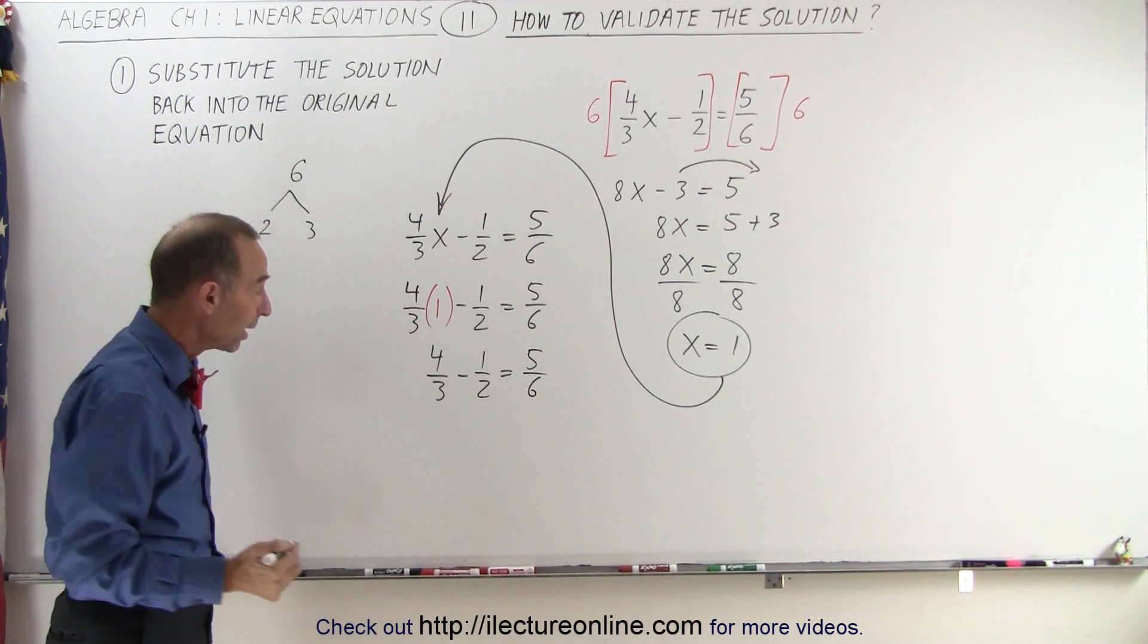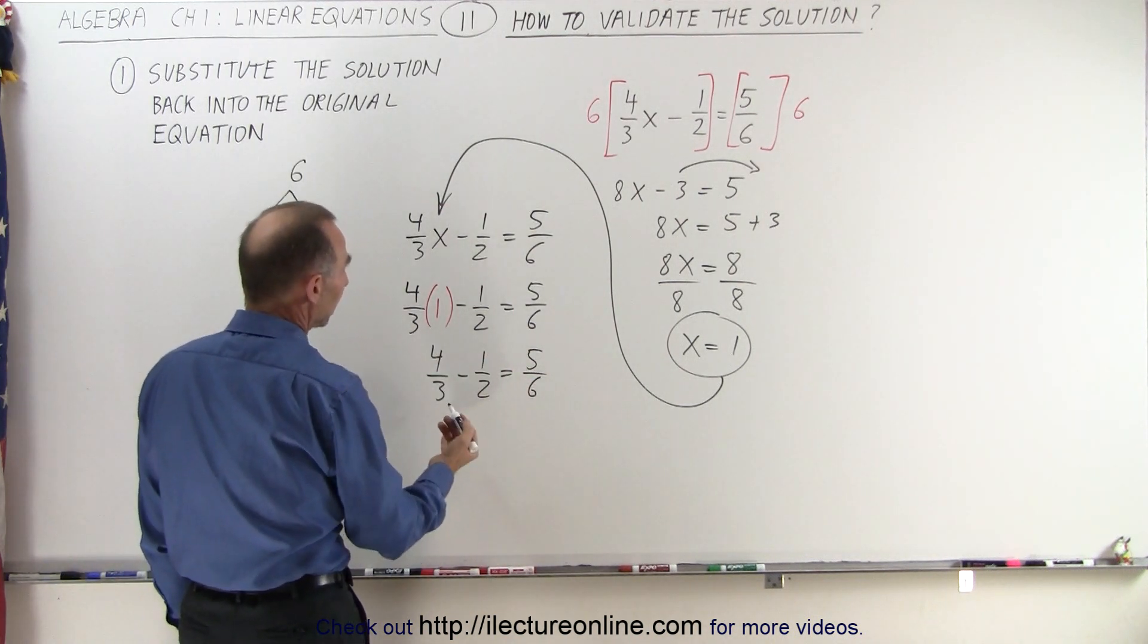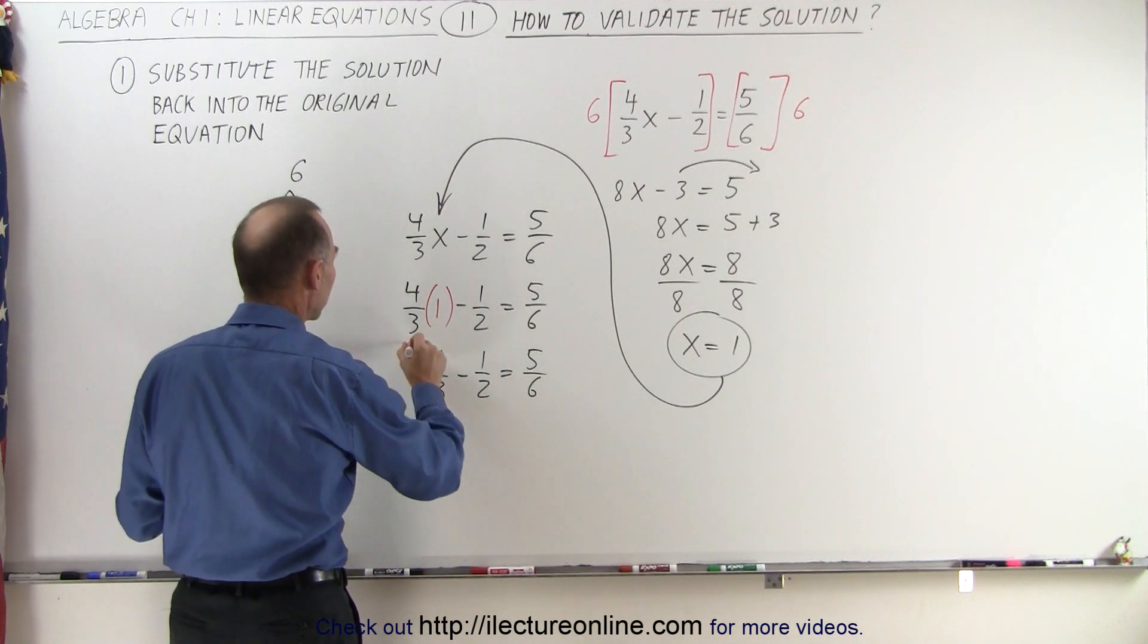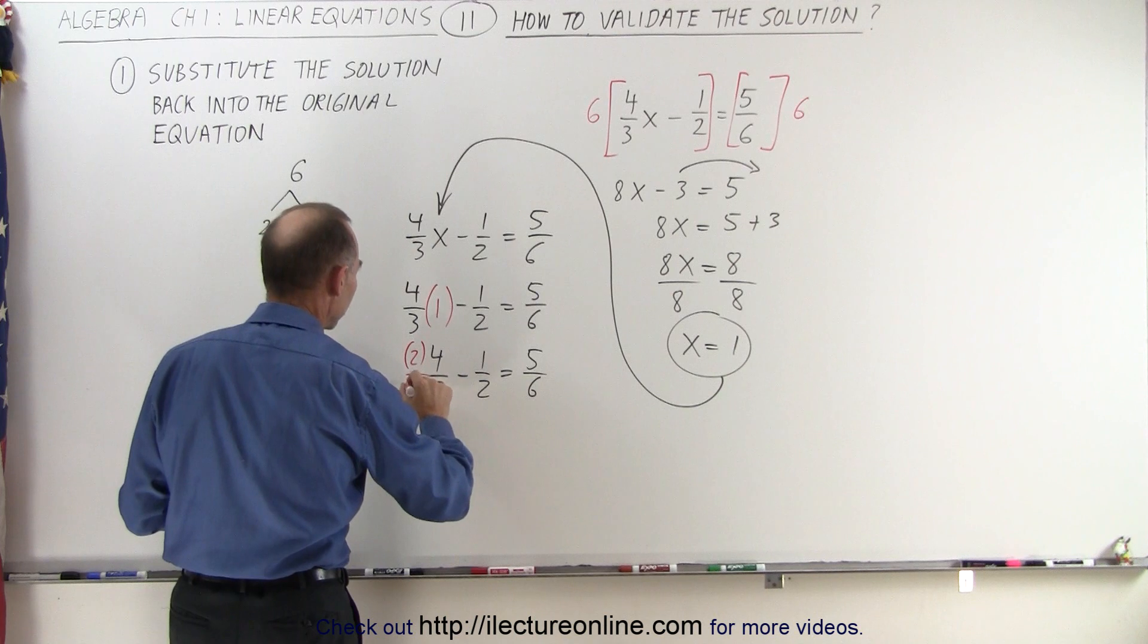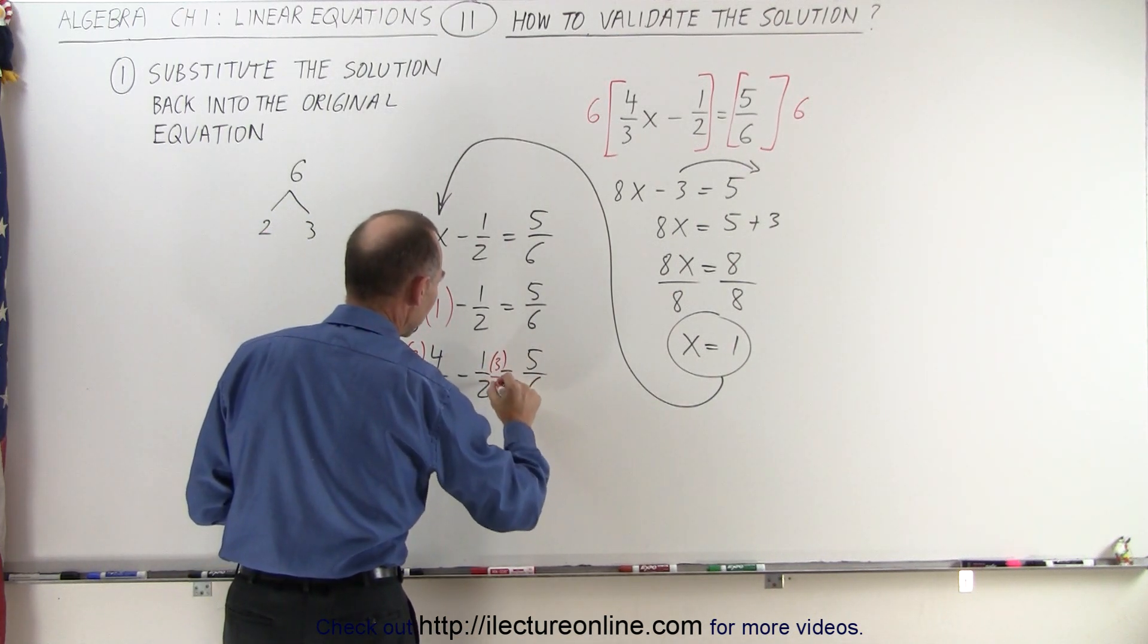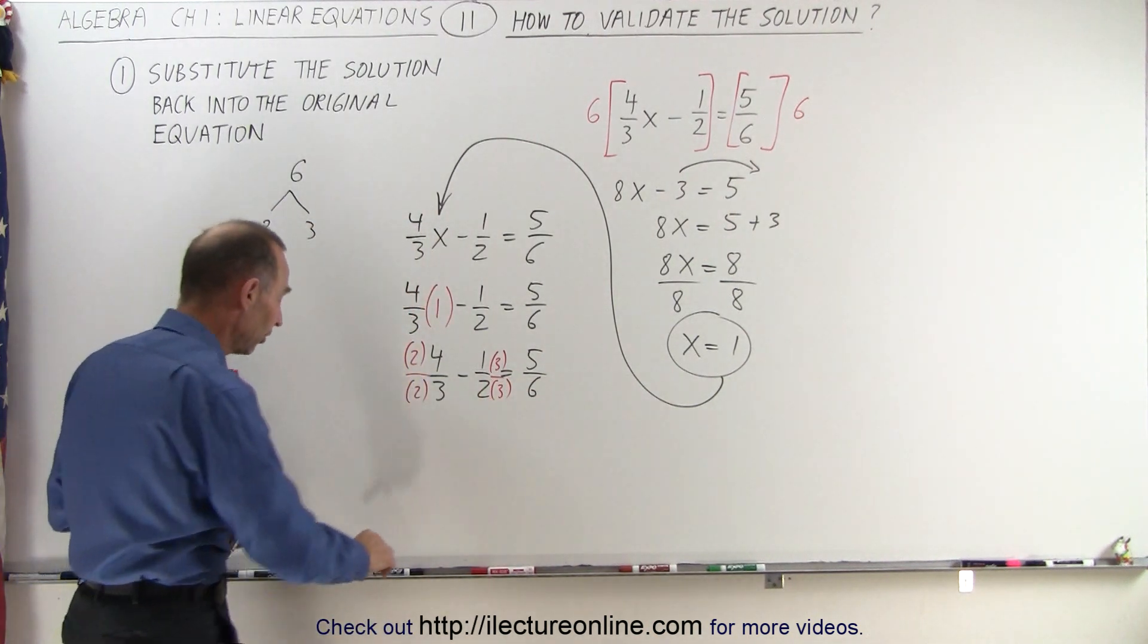Now to see if that's correct, let's go ahead and write this over a common denominator. So the common denominator would be 6, which means I need to multiply both the numerator and the denominator by 2 for this fraction, and over here I need to multiply the numerator and the denominator by 3 so that the denominators can then become equal to 6.